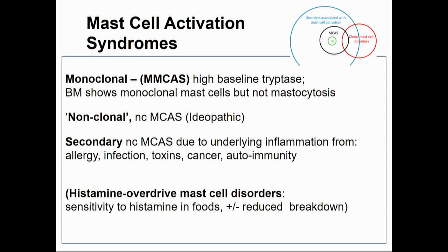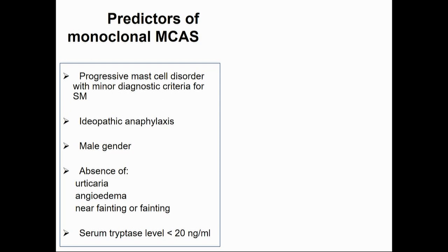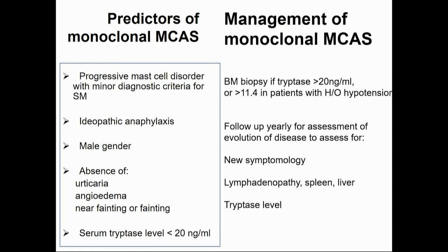Monoclonal mast cell activation syndrome is really a pre-mastocytosis condition — a progressive mast cell disorder. They may present with anaphylaxis. Compared to non-clonal, it's usually men rather than women, and there's an absence of urticaria, angioedema, and presyncope. The tryptase level is less than 20 but may rise. So if the level is greater than 20, you do a bone marrow, or sooner if they have a history of hypotension. And you follow them up to look for signs of developing into full-blown mastocytosis.